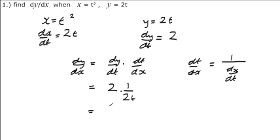The 2s cancel out, so we get dy/dx is equal to 1 over t.